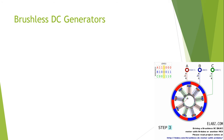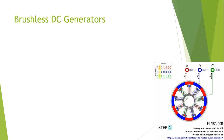This is a continuation of lecture number 26. In this part of the lecture, I will be discussing brushless DC motors. The basic construction principle of a motor and a generator is the same — when we rotate the shaft, electrical energy is produced.